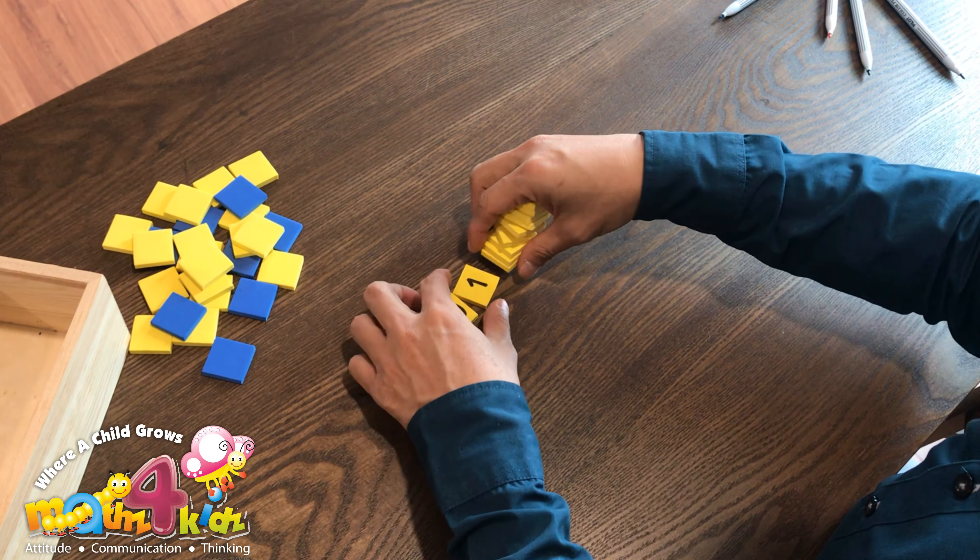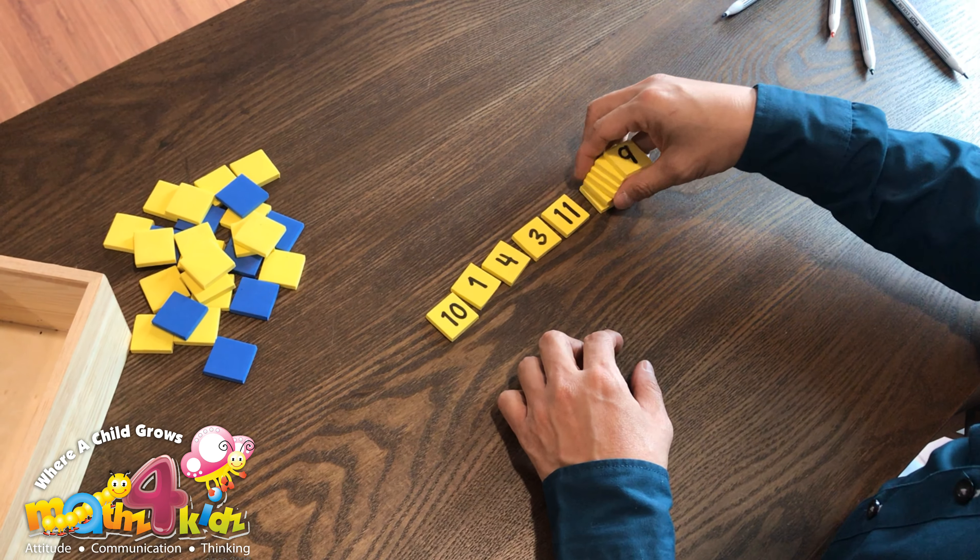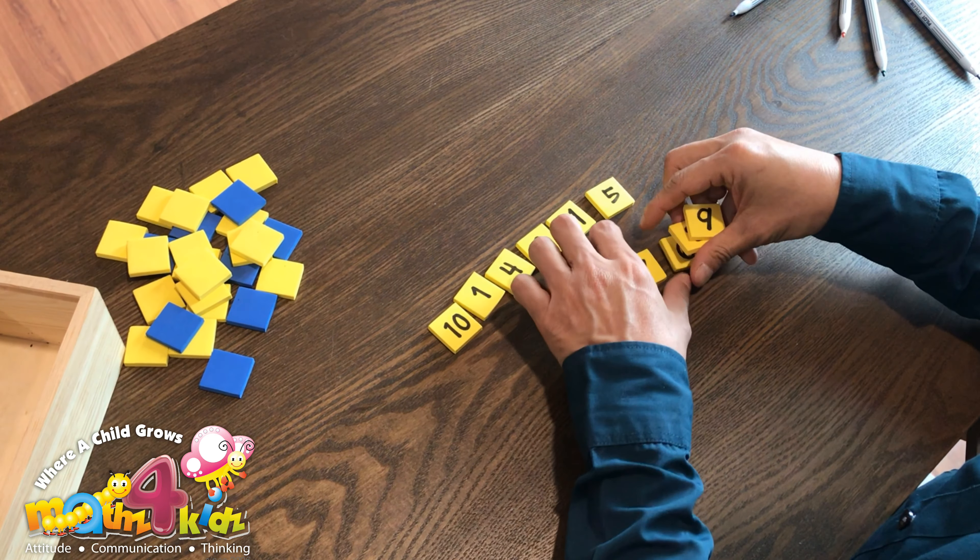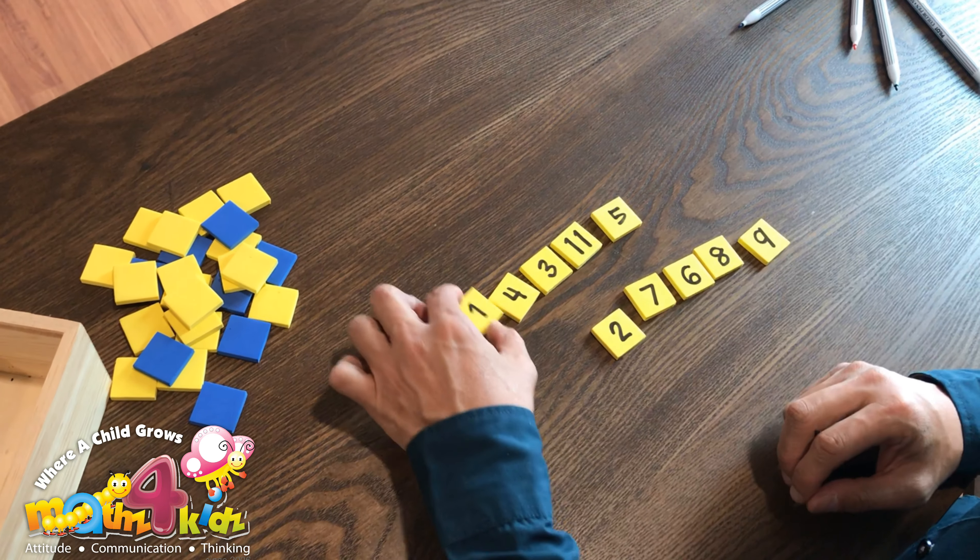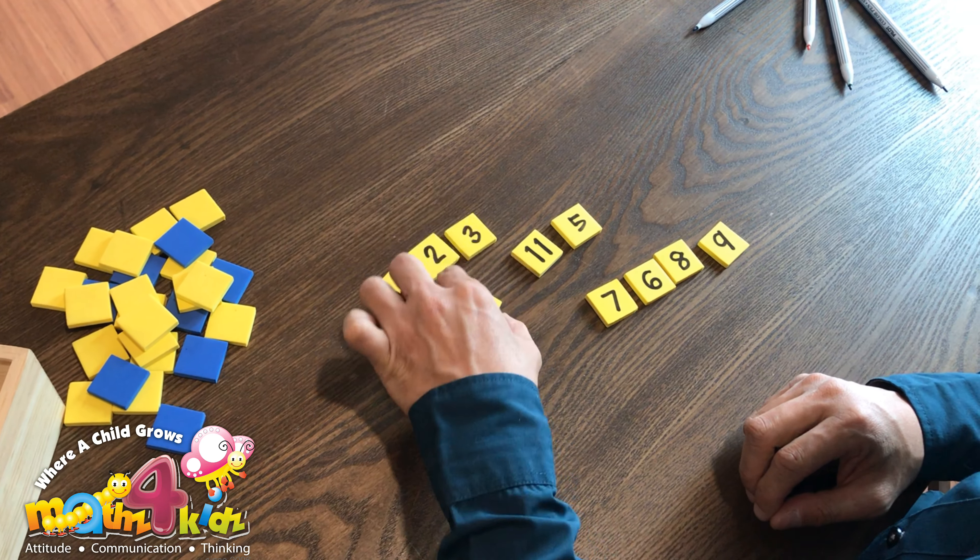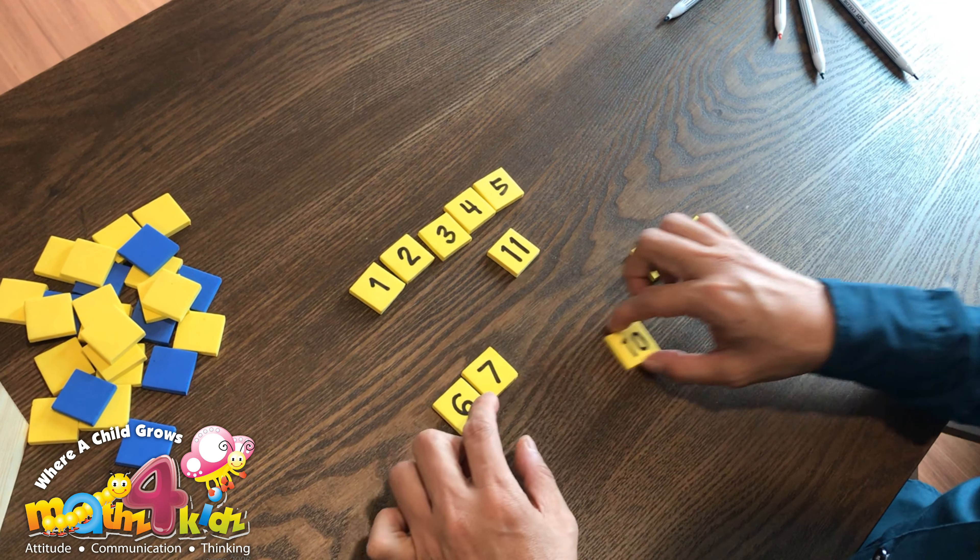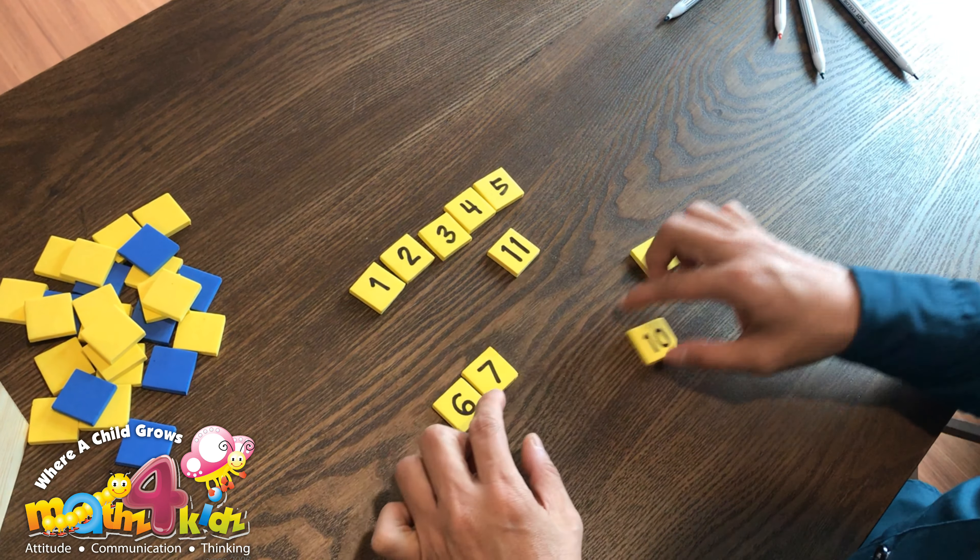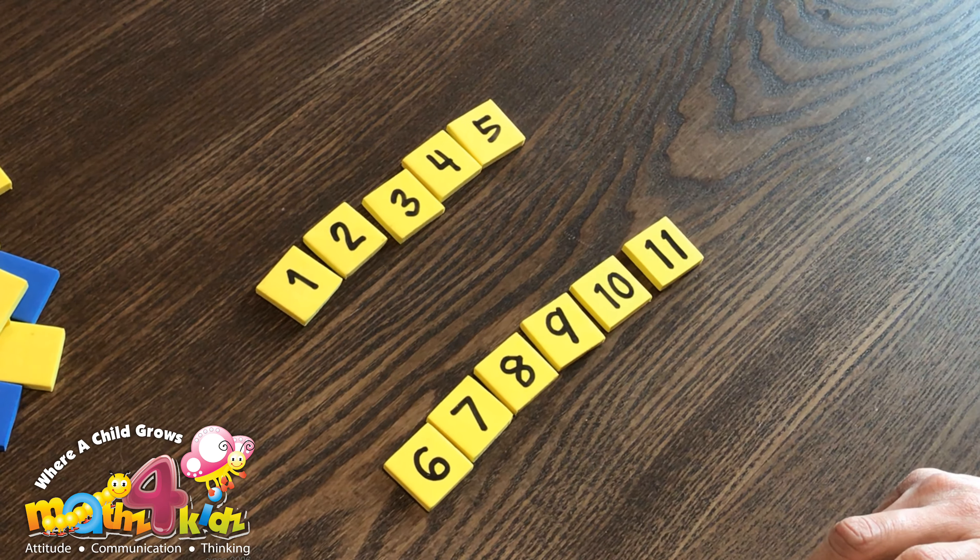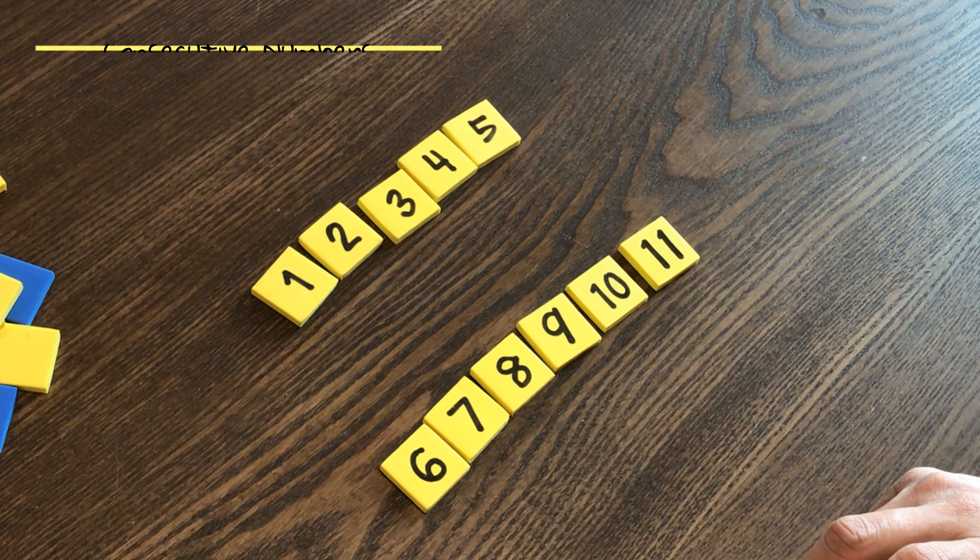This problem is about numbers, whole numbers we call them, and we are interested in numbers like 1, 2, 3, 4, 5, or 6, 7, 8, 9, 10, 11. We call such numbers consecutive numbers.